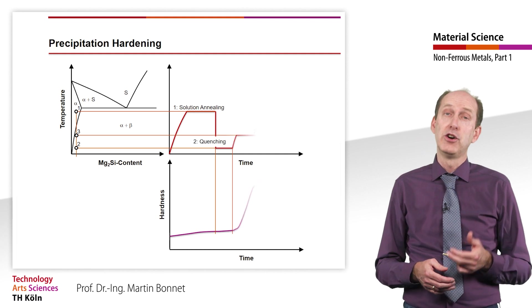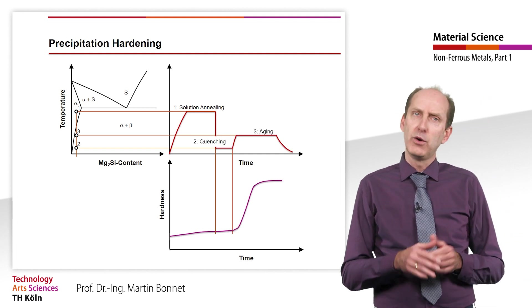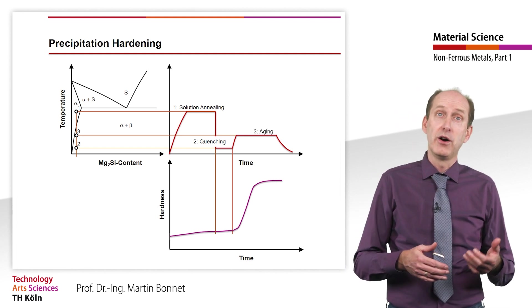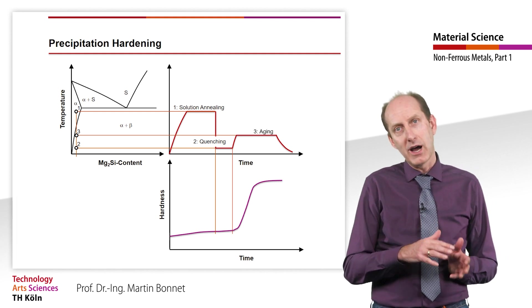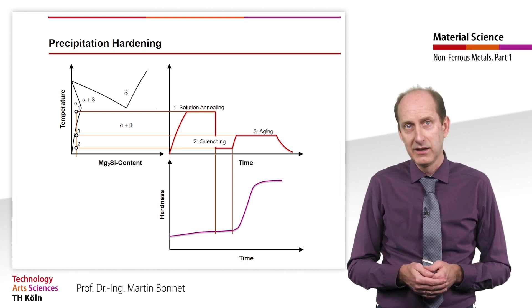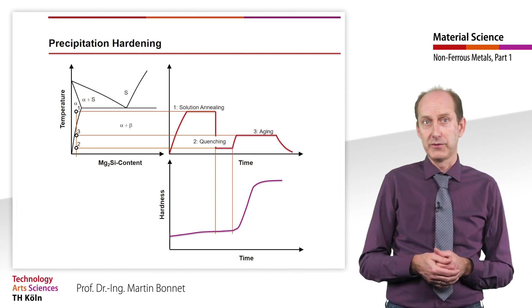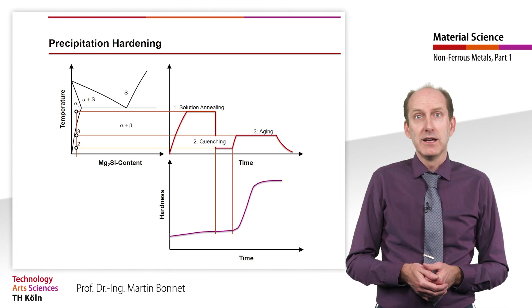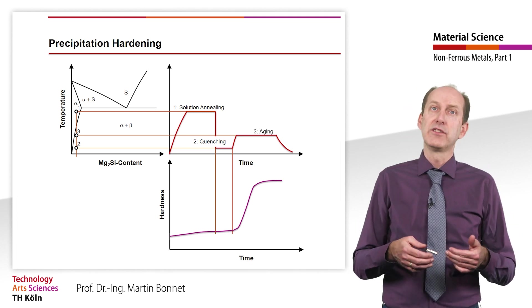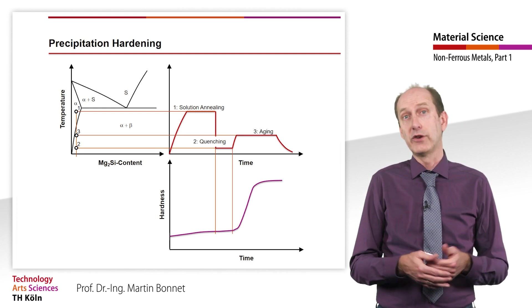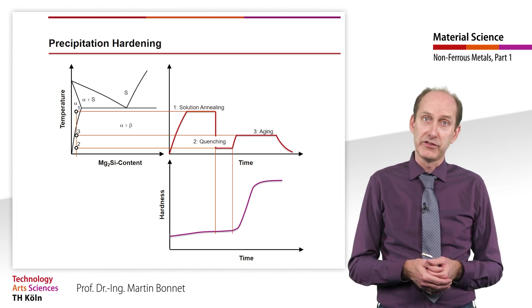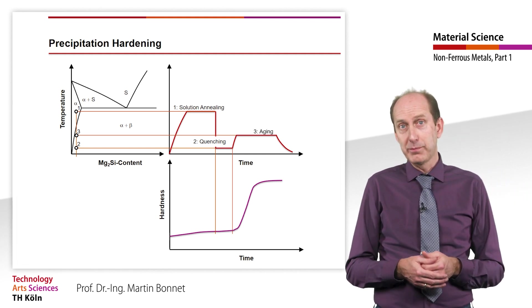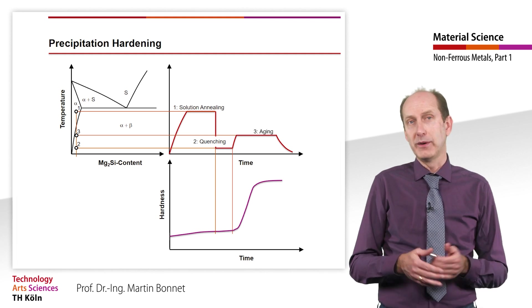Step three is followed by aging or curing at 125 to 175 degrees Celsius and, depending on the temperature, holding times of four hours to three days. Here, a selective segregation occurs. The finely dispersed phase embedded in the matrix impedes the dislocation movement and thus causes an increase in hardness and strength with loss of plasticity. Typical particle diameters here are one nanometer with particle spacings of 10 to 20 nanometers.